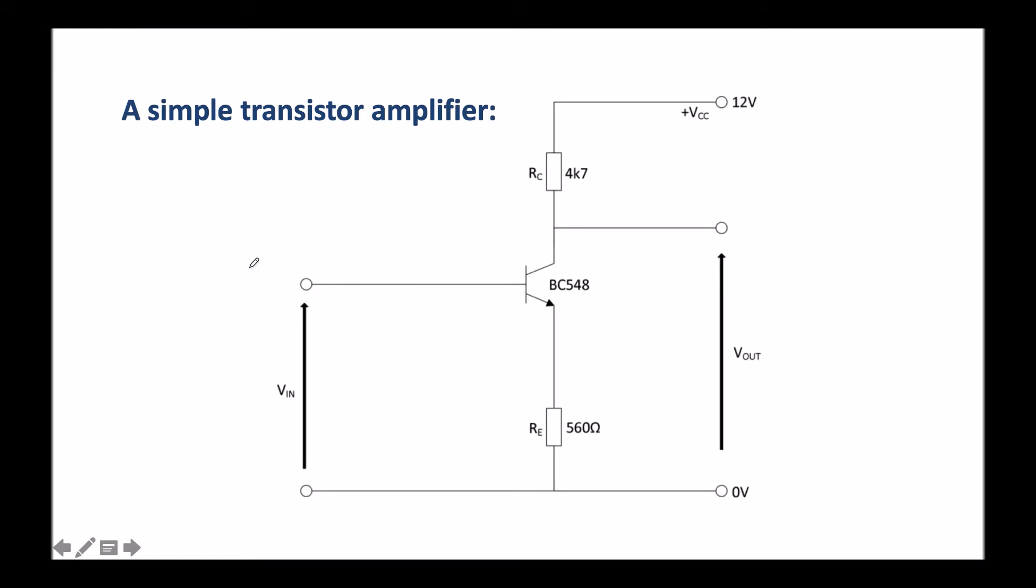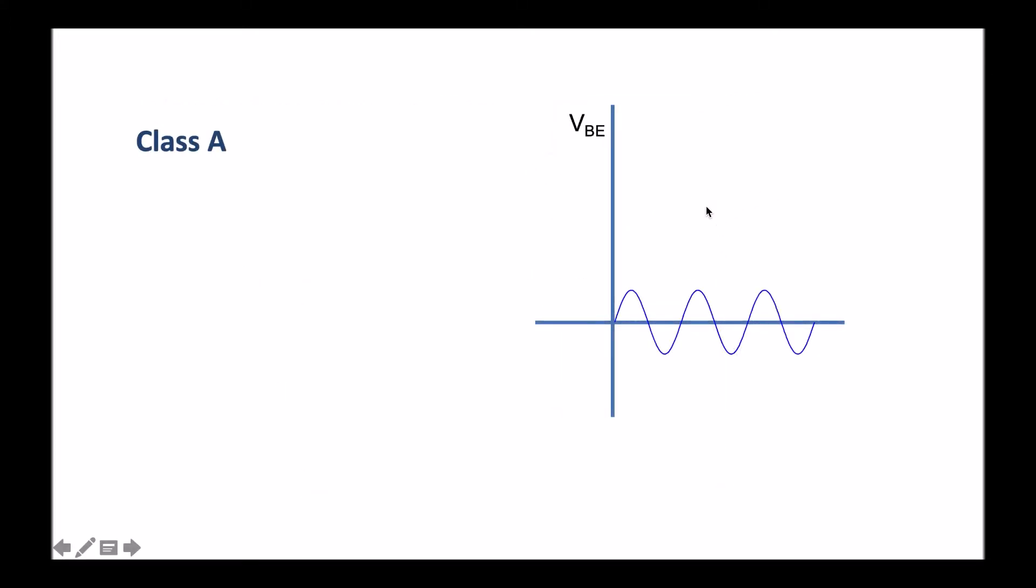We can also use this as a simple amplifier, but there's a problem with this particular circuit. Most of the signals we want to amplify, for instance audio, are generally AC signals. So we would apply an AC signal to this particular circuit and hopefully expect a larger AC signal produced on the output. There's a downside to this.